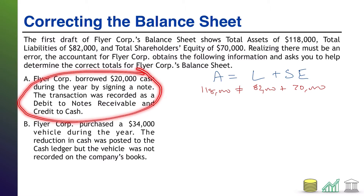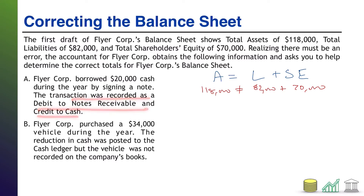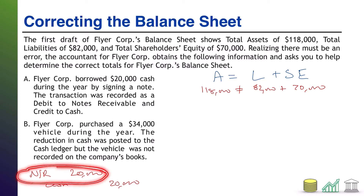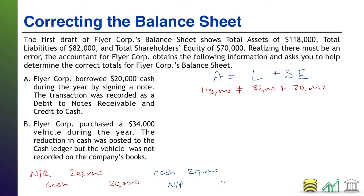First up: FlyerCore borrowed $20,000 in cash during the year by signing a note. The transaction was recorded as a debit to notes receivable and a credit to cash, $20,000. Let's think about what was done versus what should have been done. This journal entry actually says we lost cash and someone owes it to us — as if we lent someone money. But we didn't lend money; we borrowed it. What should have been recorded was debit cash $20,000, credit notes payable $20,000.